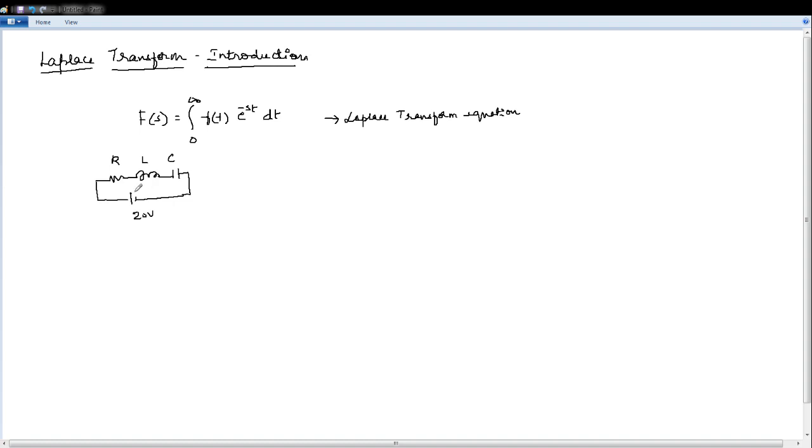So it is basically a pretty simple equation wherein you write a KVL by combining the terms of current and resistance for voltage across. For example voltage across resistance is I of T into R right and voltage across inductor is L into di by dt.